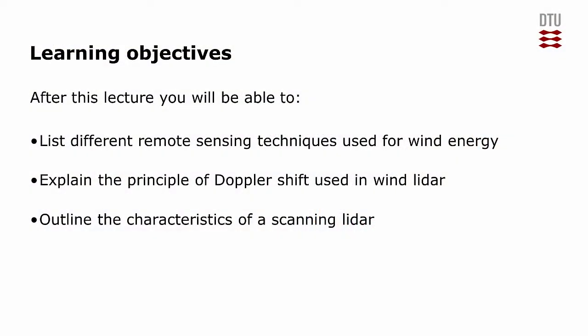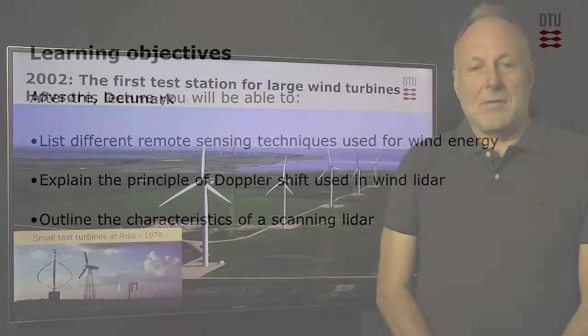The objectives that I'm going to tell you about are the different principles of using remote sensing, different instrumentation, and how we use the Doppler principle and how it works. And eventually I will show you how we have implemented wind scanners using scanner technology so we can scan wind fields all over the place in the real atmosphere.